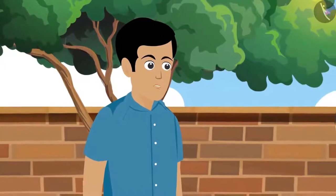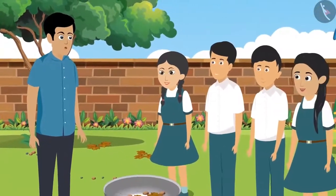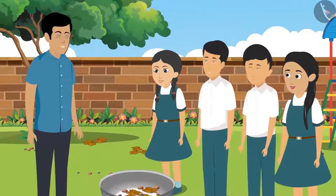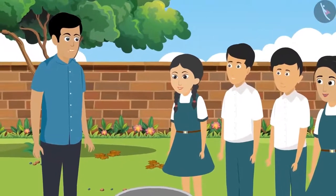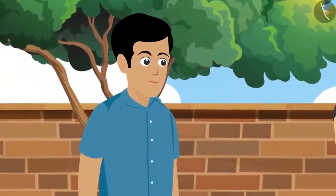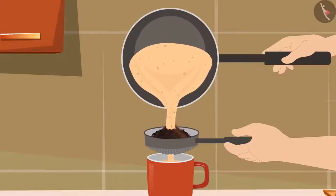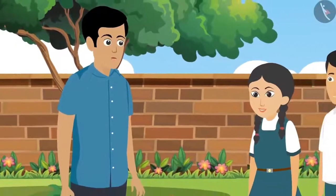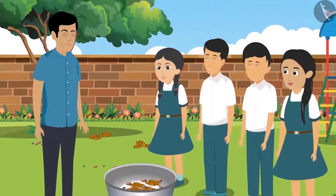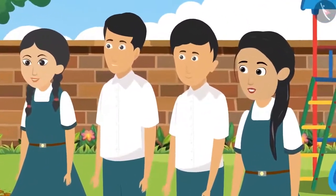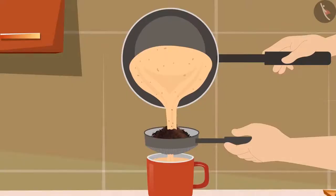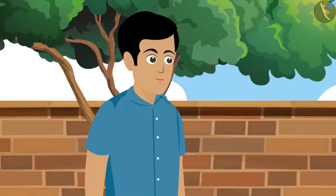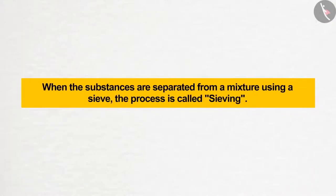The easiest process is hand picking — separating substances using hands. But if the material consisted of small-sized substances, how would we separate them? When dad makes tea, he filters the tea leaves out and separates them. Two types of substances are being separated — one is liquid and the other is solid. When substances are separated from a mixture using a sieve, the process is called sieving.